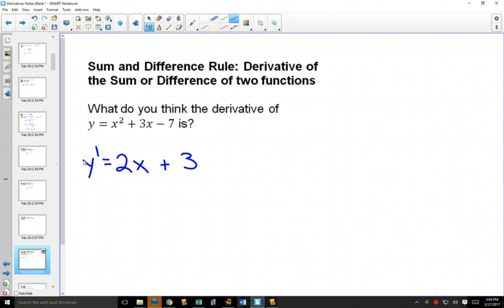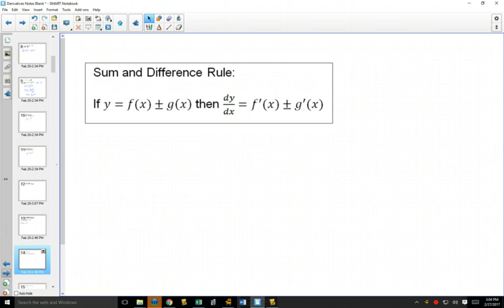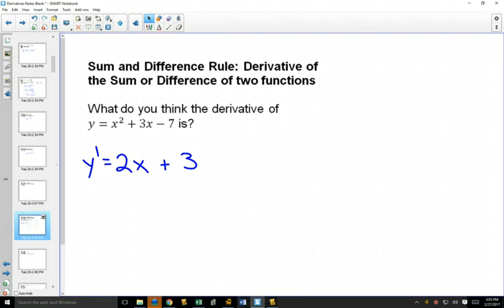So what the sum and difference rule is saying is that if you are adding or subtracting a bunch of functions together, you can do the derivative of each one separately and then add or subtract them just like you had before in the end. That's exactly what we did in this first one.